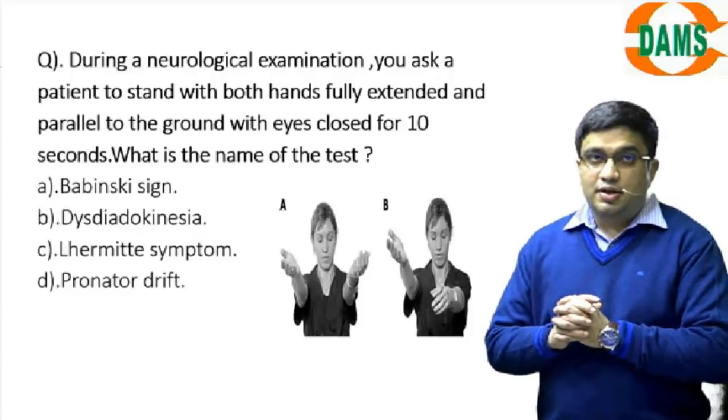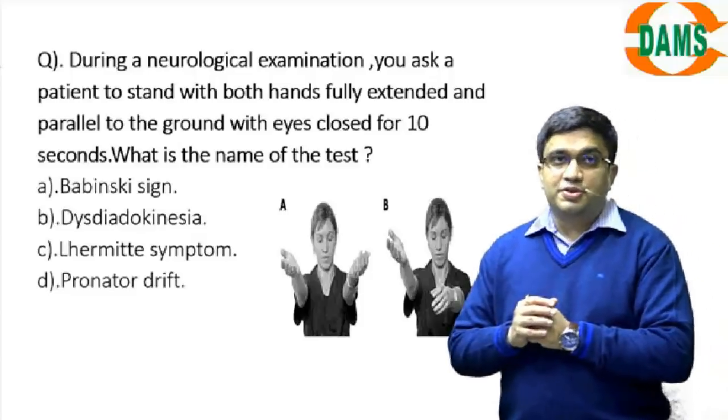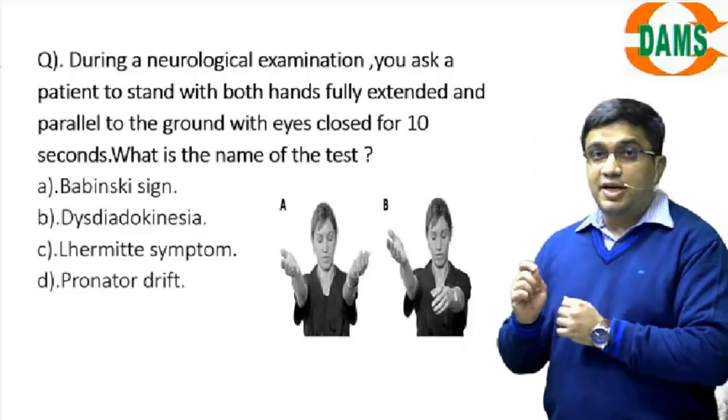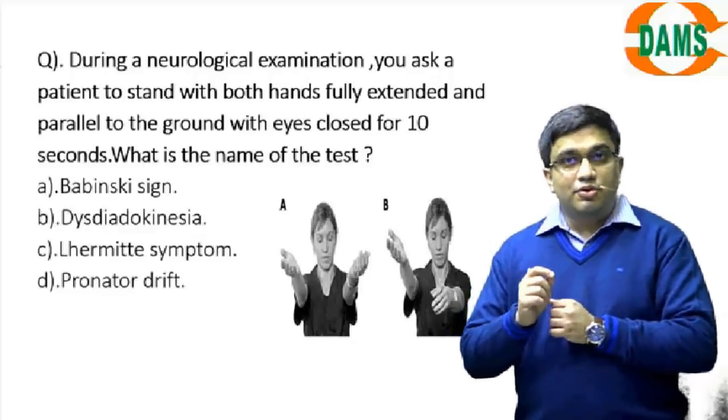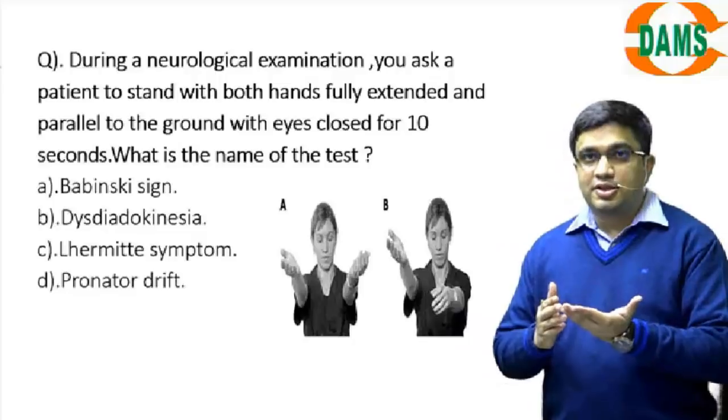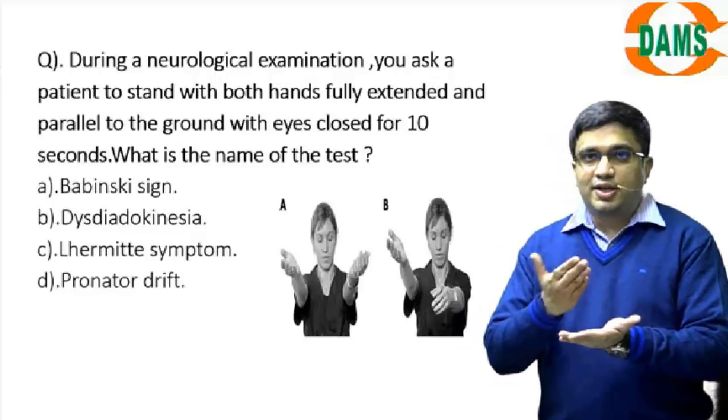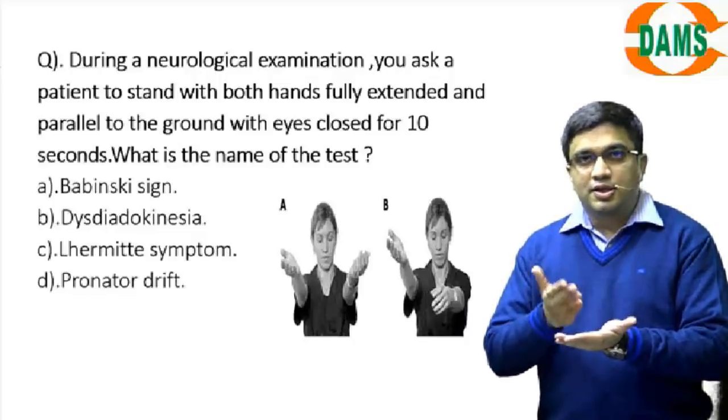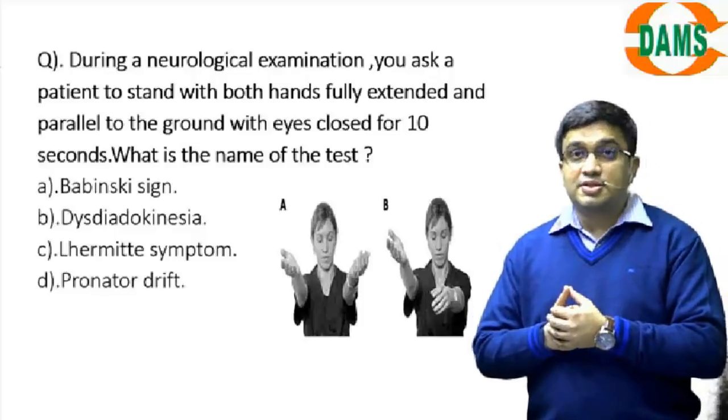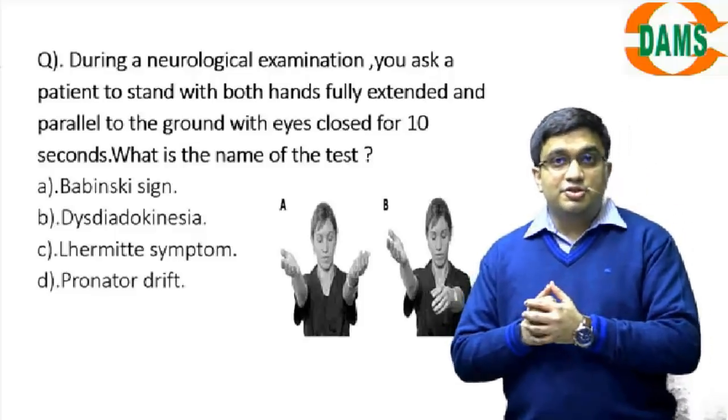Other signs which are in the options, like if you remember disdiadochokinesia, it's a very old clinical sign to see the cerebellar lesion. We tell the patient to hold the hand like this and keep on doing it. This requires coordination and this coordination comes from the cerebellum, so in a cerebellar injury you will have this sign, disdiadochokinesia.